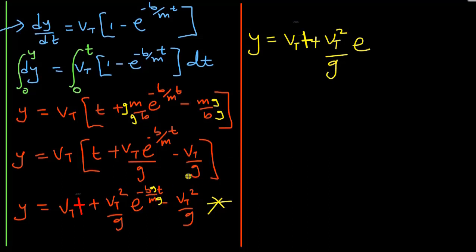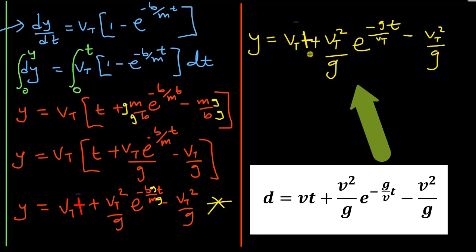Now watch here. I have B over Mg, which actually is the terminal velocity down here. And then I've got negative g times t. I'll tell you why I did that in a moment. Minus Vt squared divided by g. Finally, that's our equation that relates the terminal velocity, the displacement, the acceleration due to gravity and the time for a body falling freely through a fluid.